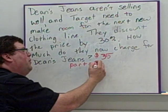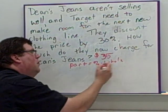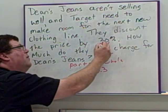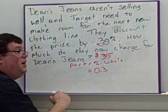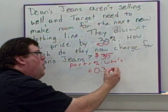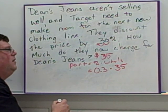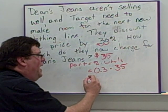The percent would be 0.3, dividing that 30 by 100 because it's 0.3 multiplied by the whole, which is our $35.